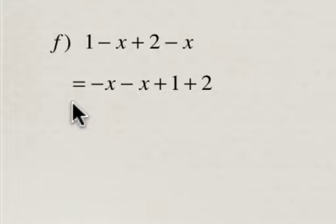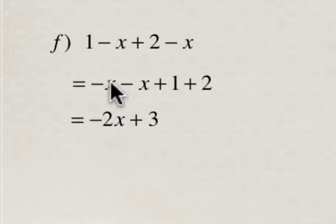But we can't add or subtract the constant and a term with a variable. So this is negative x minus x is negative 2x. So all we do is we add or subtract the coefficients. This is negative 1 minus negative 1, so negative 1 minus 1 is negative 2, and 1 plus 2 is 3.